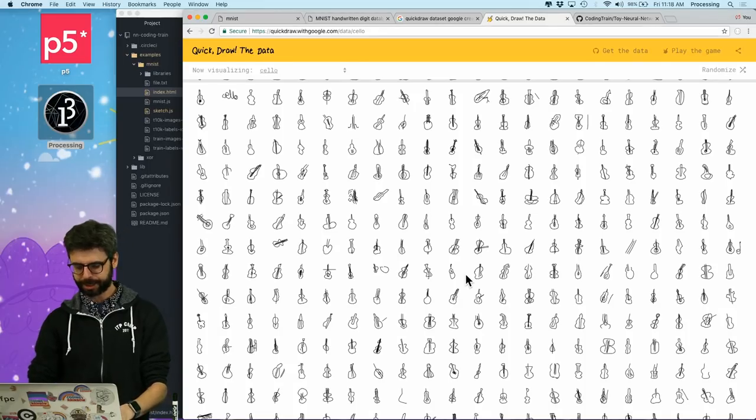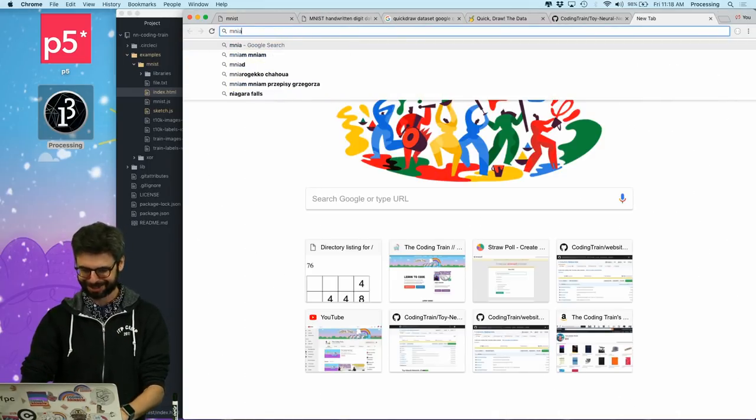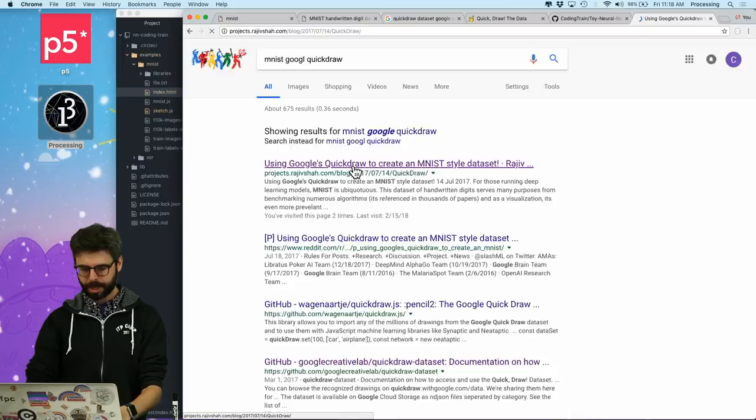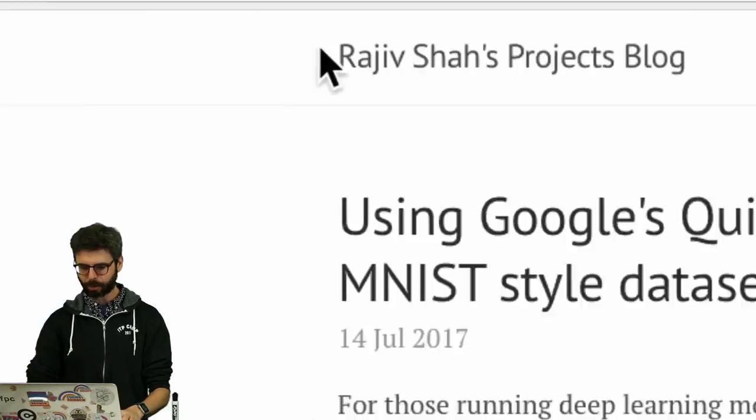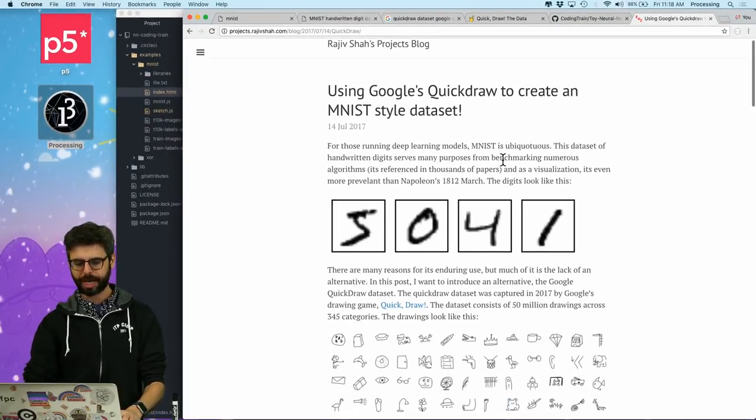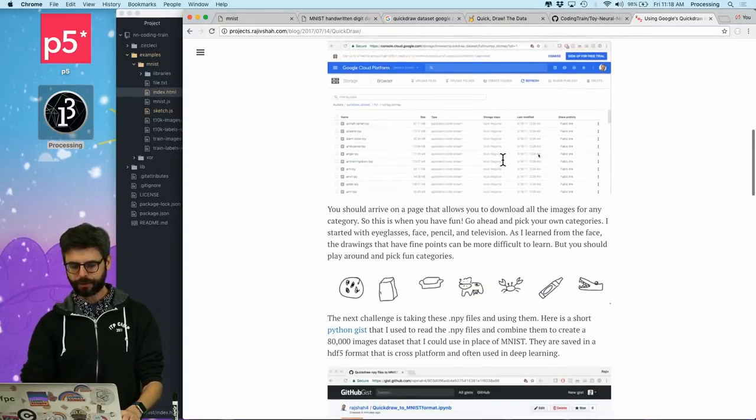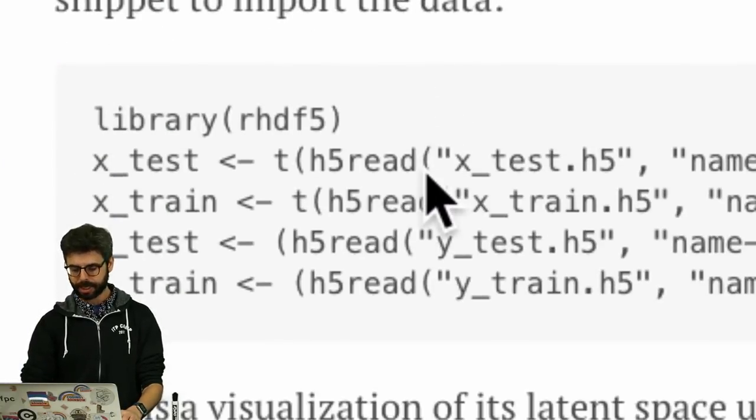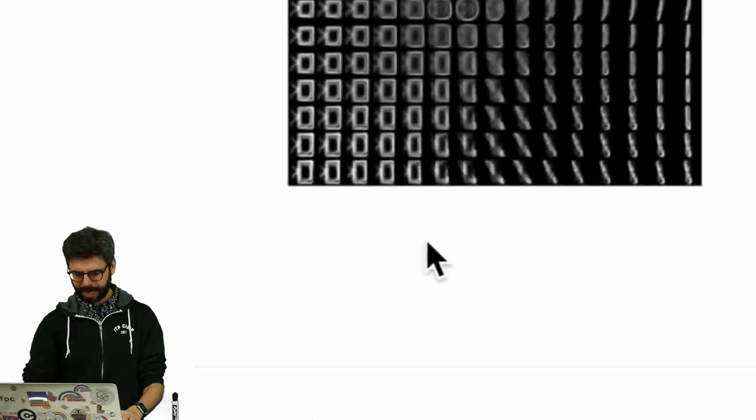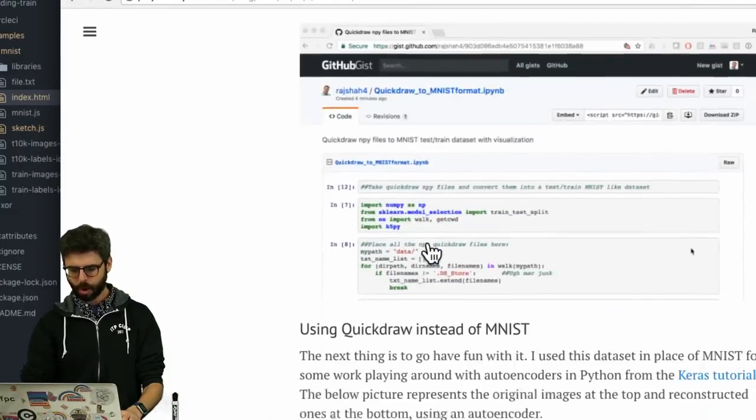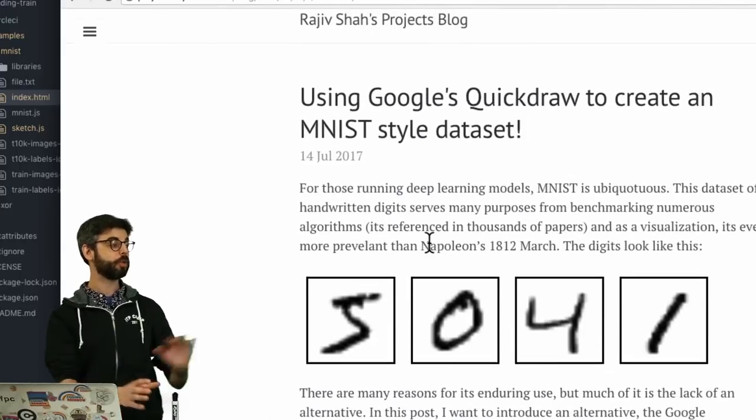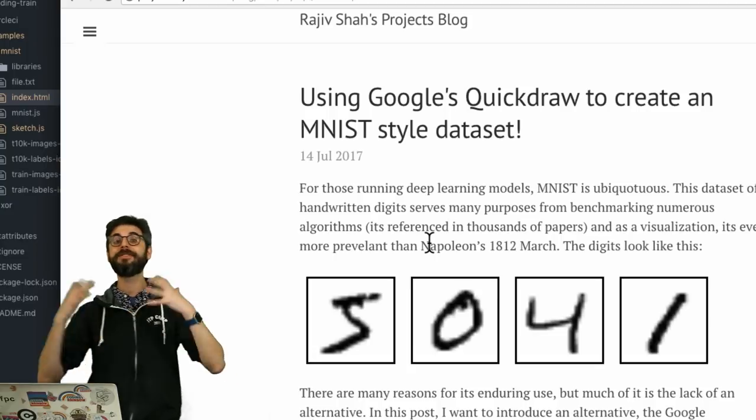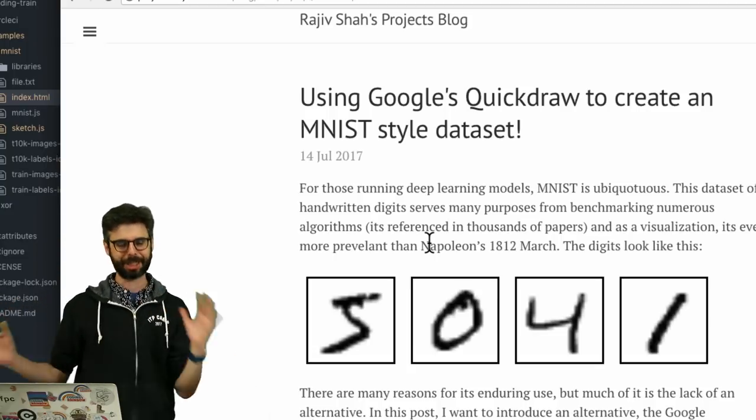This is not my own genius idea. This idea came from this blog post by Rajiv Shah, using Google's Quick Draw to create an MNIST-style dataset. All of this is looking at how to do this in Python. But I'm going to sort of do this on my own, and I'm going to use Processing to parse and work with the data in p5.js to then do the neural network magic stuff.